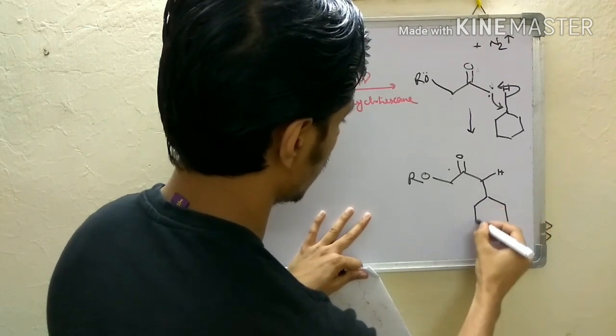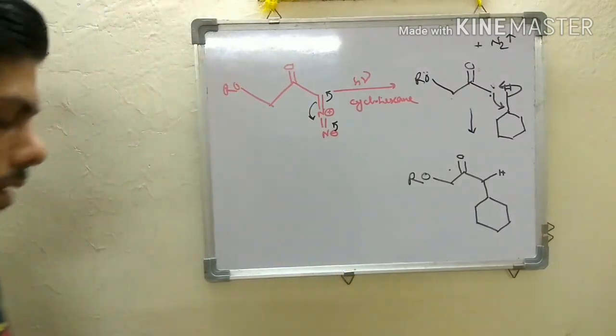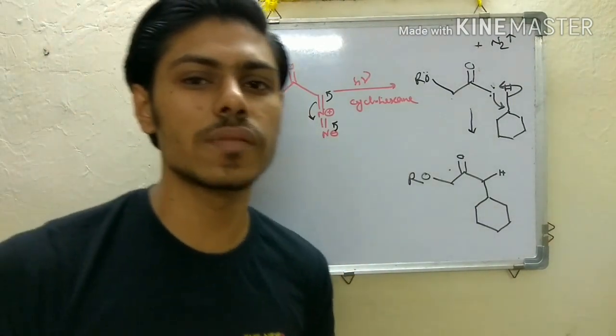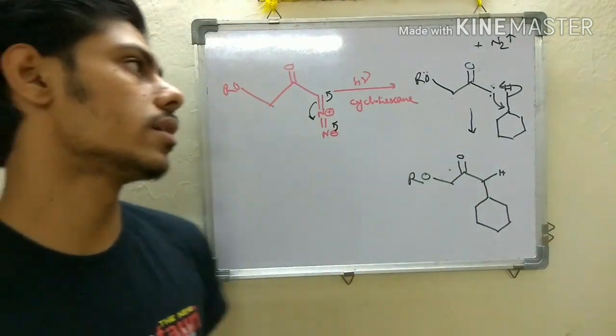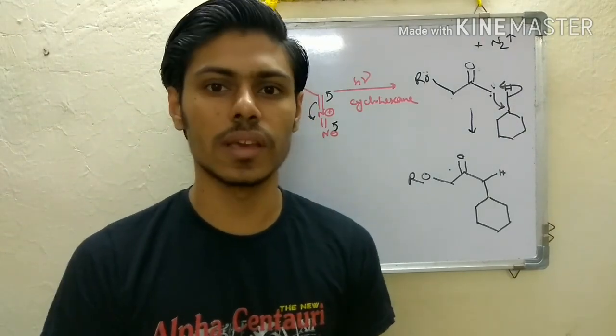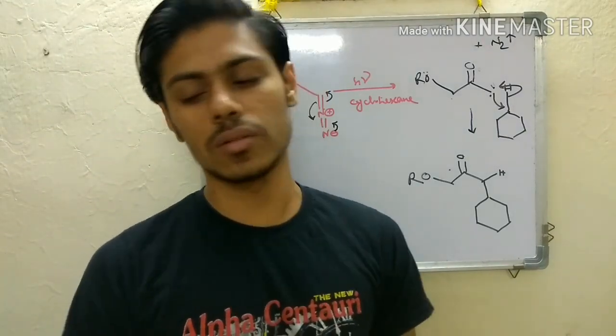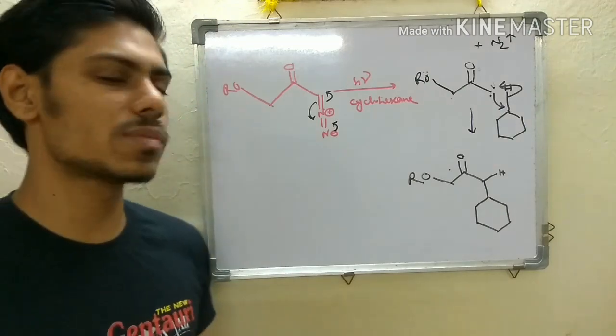And you will get a product like this - hydrogen and you have your cyclohexane here. So solvent cyclohexane which is a very inert solvent will react in this case.